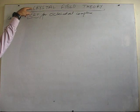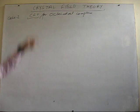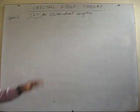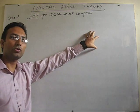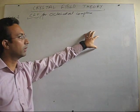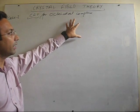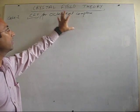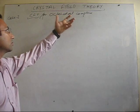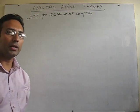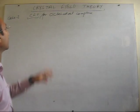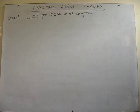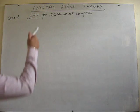Why does the name 'crystal' appear here? Because the attraction between metal and ligand is purely ionic, which is the same as in an ionic crystal — that's why it is called crystal field theory.